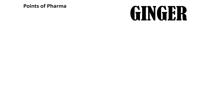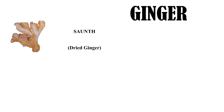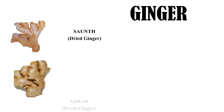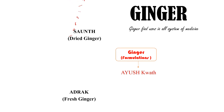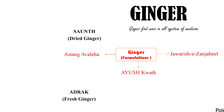Hello everyone, welcome to Points of Pharma. Today the topic is ginger. It is called saunth. The term saunth is used for dried ginger. Fresh ginger is called adrake. Ginger finds usage in all systems of medicine. Today we will know about ginger-containing formulations such as Ashtang Avle and Jawarish Gingivir.